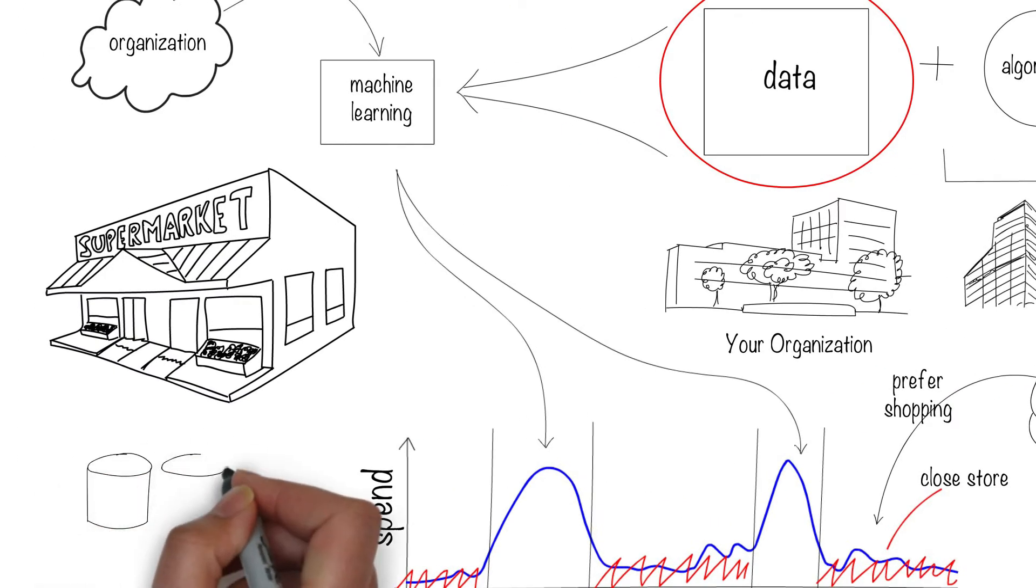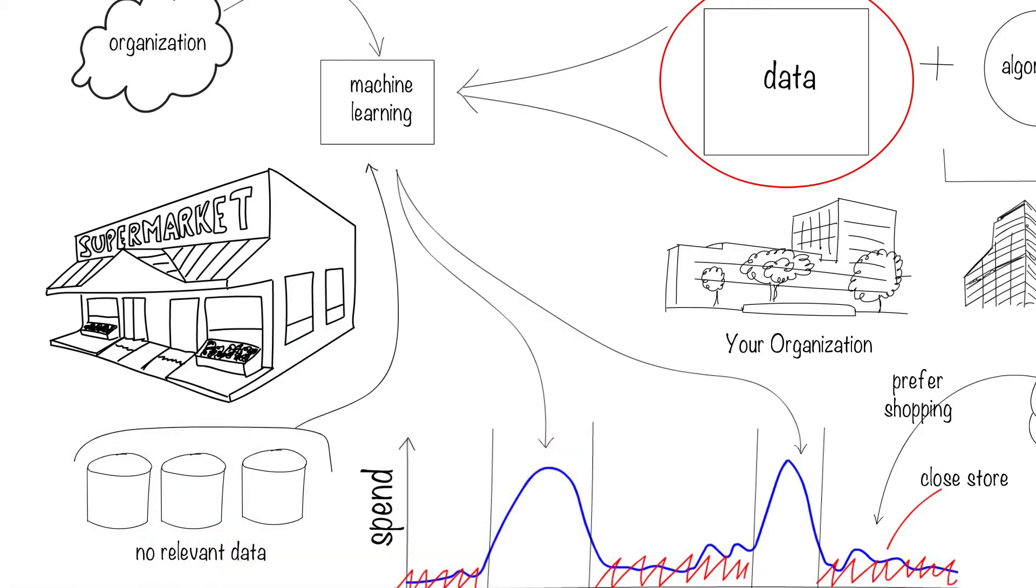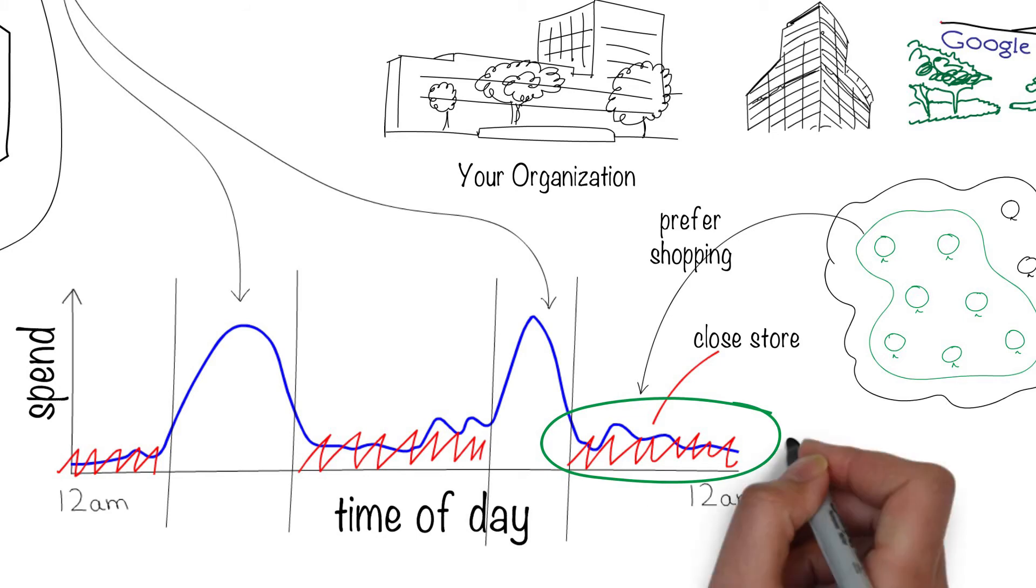Well, now you don't have any data covering the full 24-hour life cycle. So no machine learning algorithm can infer about this and give you an updated recommendation to keep your store open late at night. The machine cannot make up for the data that you lost.